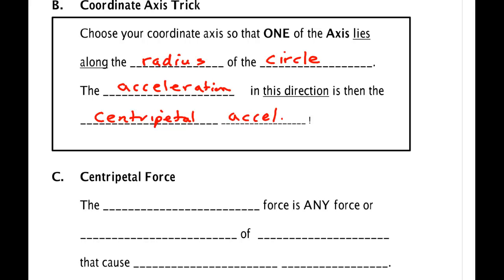Students know that there's centripetal acceleration, and they know there's a net external force that causes that acceleration, and they've heard of centripetal force, so they decide they've got to add some extra arrows to the free body diagram. That's the one thing you must not do. If you do that, you're going to have trouble. When you add an arrow to a free body diagram, you add a variable to the algebra equation. If you add arrows that don't exist, you add unknowns to your equations and you will be stuck.